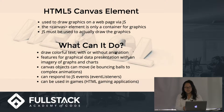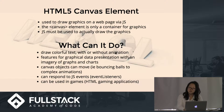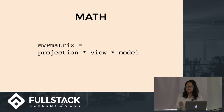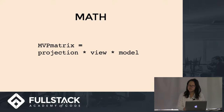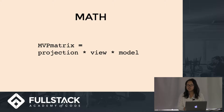Now the better question is: how does WebGL do its rendering? How is 3D rendering achieved anywhere? The answer is math — specifically, the equation: MVP matrix equals projection times view times model, where MVP literally stands for model, view, projection matrix.